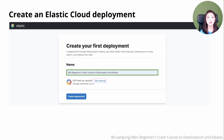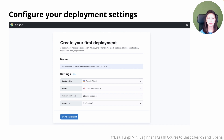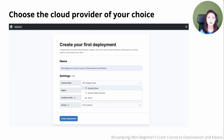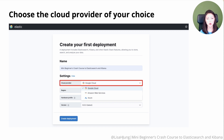Then click on the edit settings option. It'll display a menu to configure your deployment settings. First, you'll choose the cloud provider of your choice.